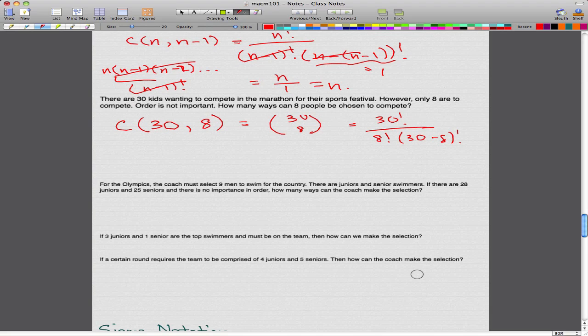The next example is for the Olympics, the coach must select 9 men to swim for the country. There are junior and senior swimmers. If there are 28 juniors and 25 seniors, and there is no importance of order, how many ways can the coach make the selection? All you have to do is just take 28 plus 25, and that will give you 53. So we have 53 swimmers in total. The coach must select 9 men to swim for the country. So again, it's like this marathon example we just did. There's 9 spots and 53 distinct objects. So the answer is simply 53 choose 9.